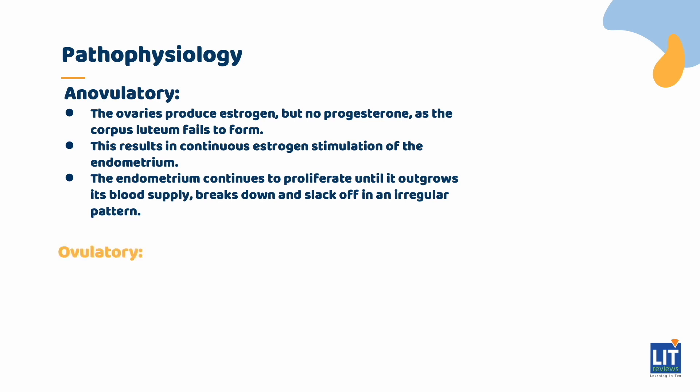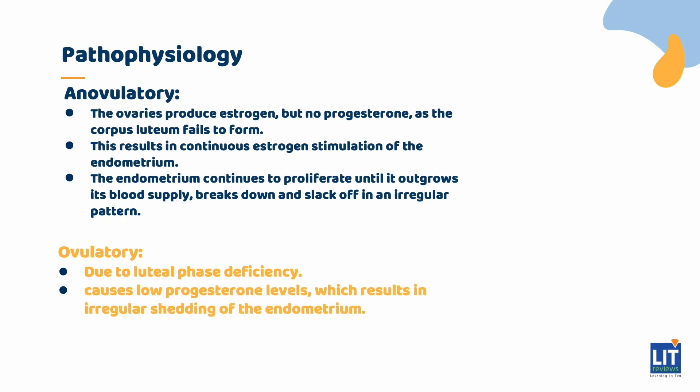Ovulatory AUB can be due to luteal phase deficiency. Luteal phase deficiency causes low progesterone levels, which results in irregular shedding of the endometrium.